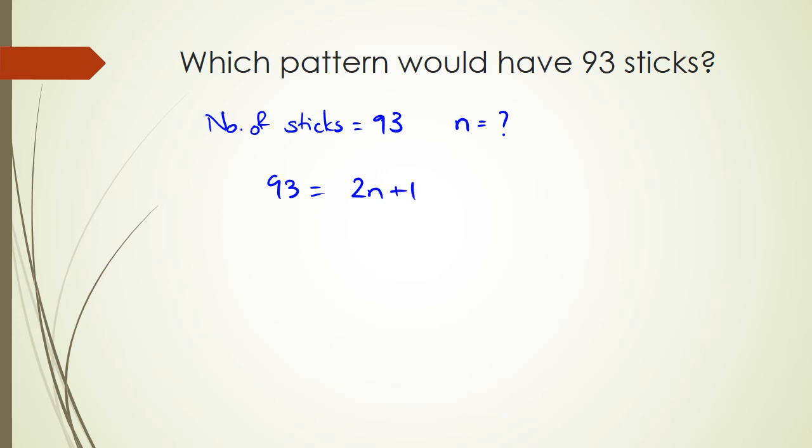So we write this as 93 equals 2n plus 1. And now it's just a matter of rearranging, guys. So we have minus 1, minus 1. Take away from both sides, and we end up with 92 equals 2n. And then divide by 2, and divide by 2 on the other side. And what you end up with is 46 equals n. So we can say that the 46th pattern has 93 sticks in it.